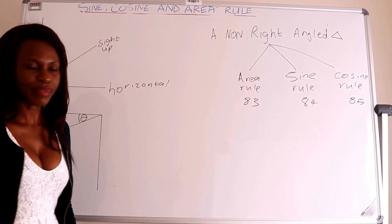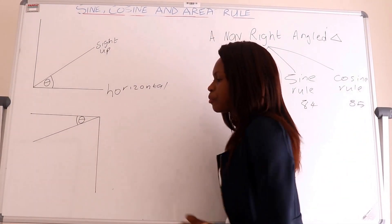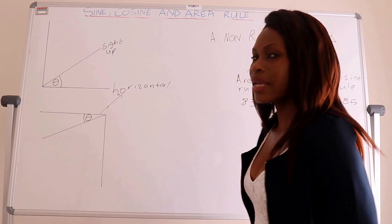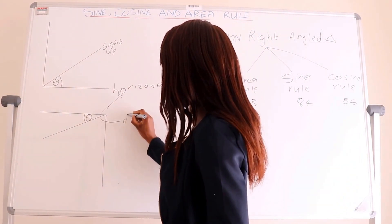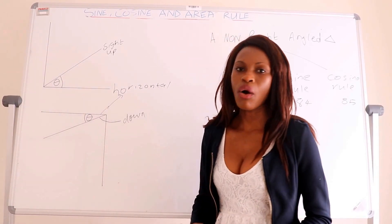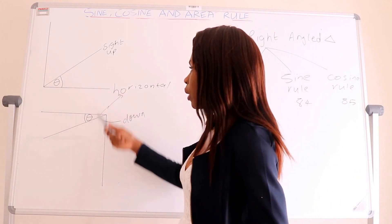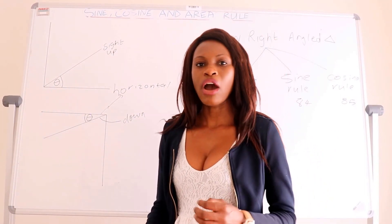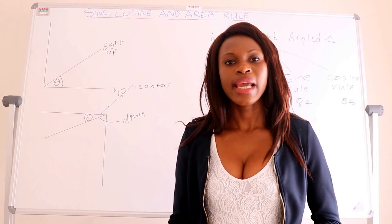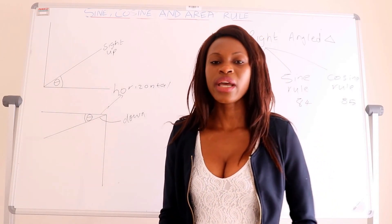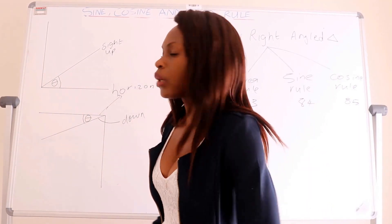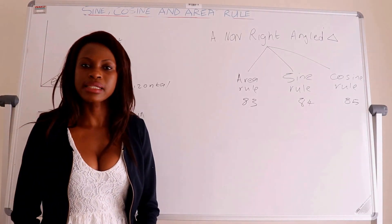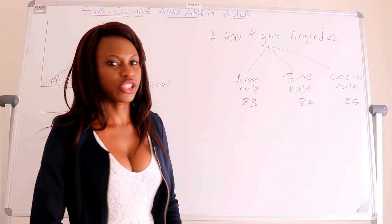The second sketch shows you the angle of depression, which is always between the horizontal and the line going downward to the object. This angle is the angle of depression. The difference between the two angles: the angle of elevation is between the horizontal and the line going up, while the angle of depression is between the horizontal and the line going down. Importantly, the angle of depression and the angle of elevation are always equal — the only difference is direction.